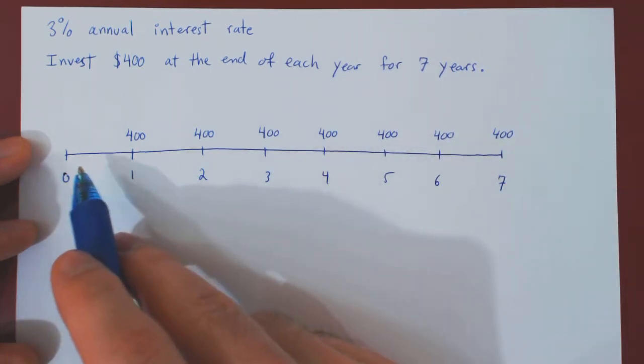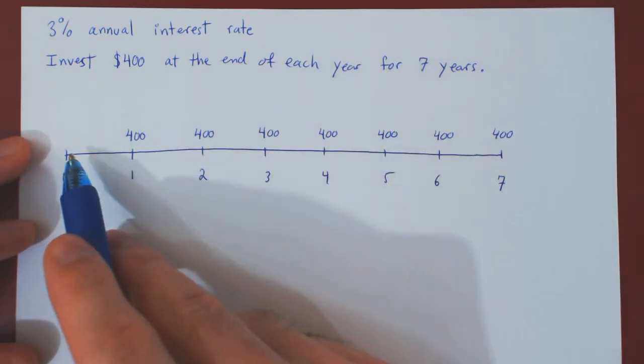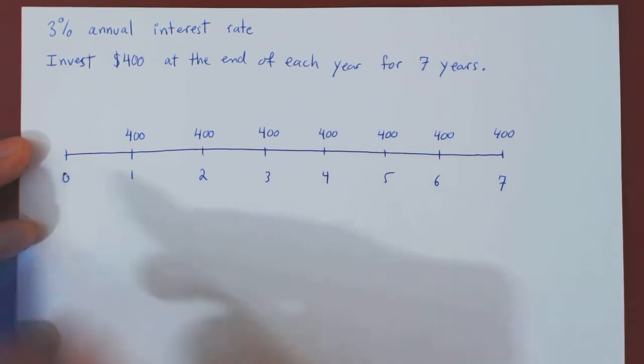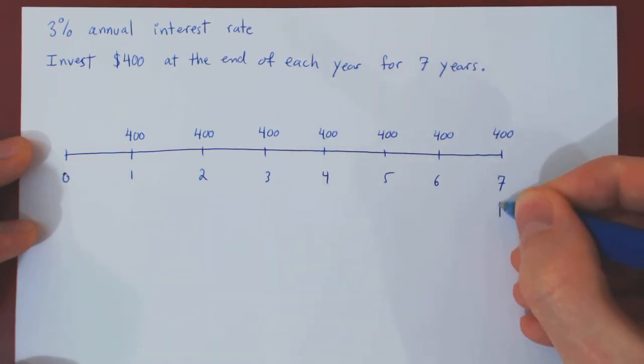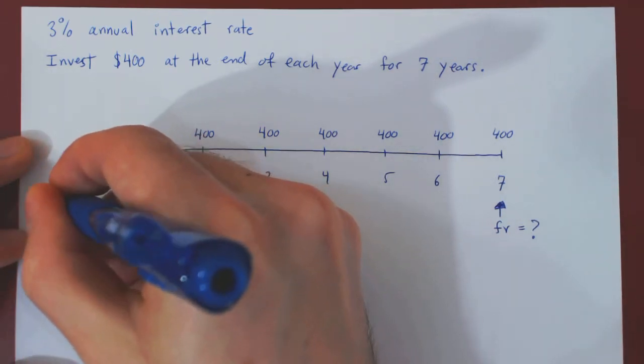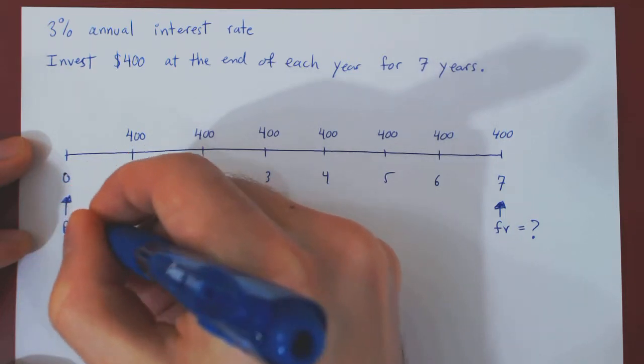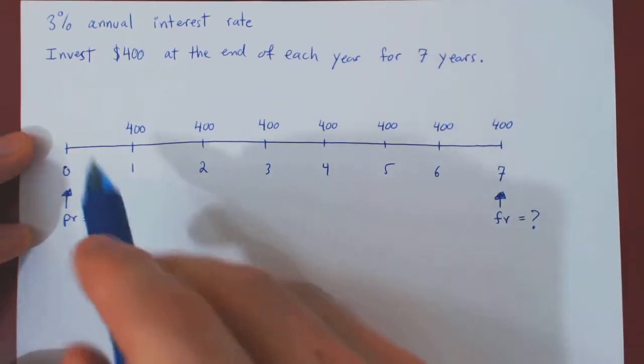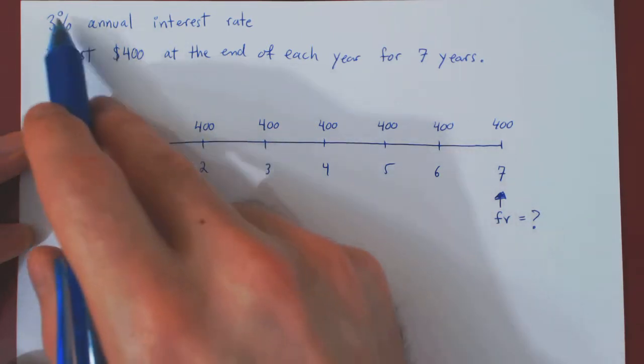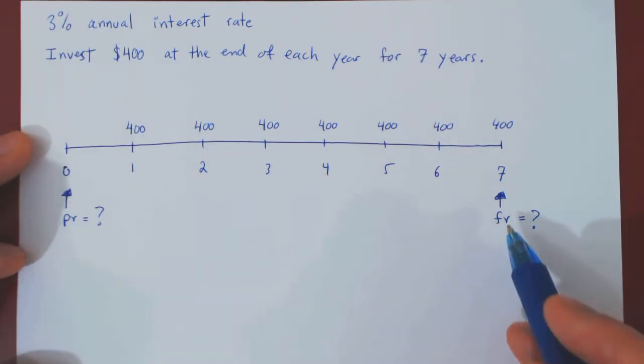The two questions we're going to answer: First, what is the final value of those investments, so the value at the end of the seventh year, and then we'll find the present value at time 0 of the same seven investments. So I'll call this simply FV for final value, and this I will call PV for present value. And since we have an annual interest rate of 3% over each unit of time, the interest rate applicable is 3%. So let's first find the final value.